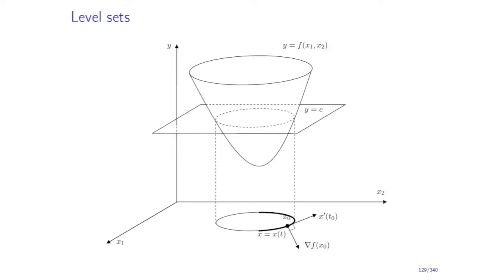Let's look at this function of two variables. The plane x1, x2 represents the variables, and the y-axis shows the values of the function for the corresponding x1 and x2. The level set is found by selecting some level for the value of the function — say where f(x1, x2) equals c — and it's like cutting the plot of this function at this level. At the cut, we get this circle, and projecting it to the x1, x2 coordinate plane gives the level set corresponding to level c.